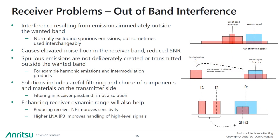Out-of-band interference results from emissions immediately outside the bandwidth of the wanted signal. Out-of-band emissions normally exclude what we refer to as spurious emissions, though they are sometimes used interchangeably. We normally classify spurious emissions as non-deliberately created signals transmitted outside the wanted transmitter band — signals far from the wanted signal. Common examples of spurious emissions are harmonic emissions and intermodulation products.